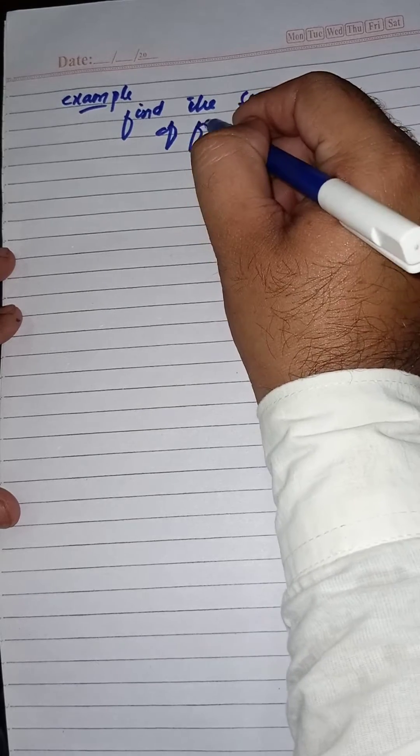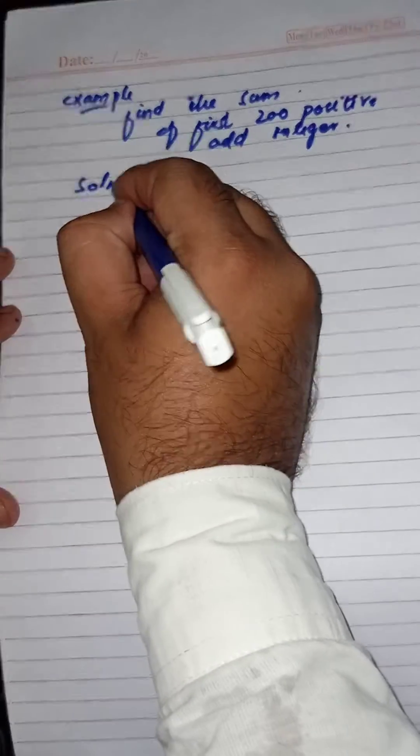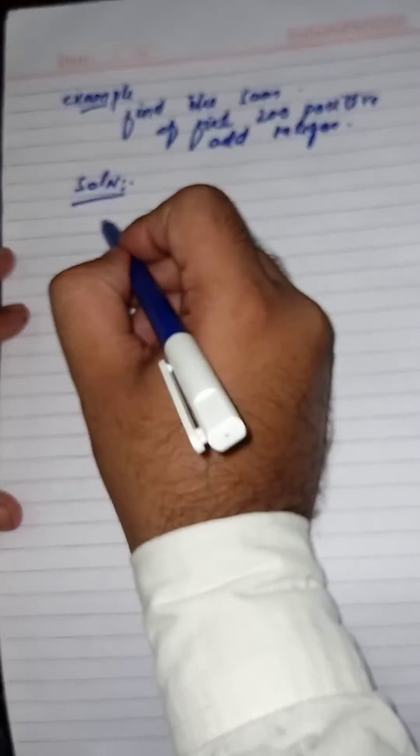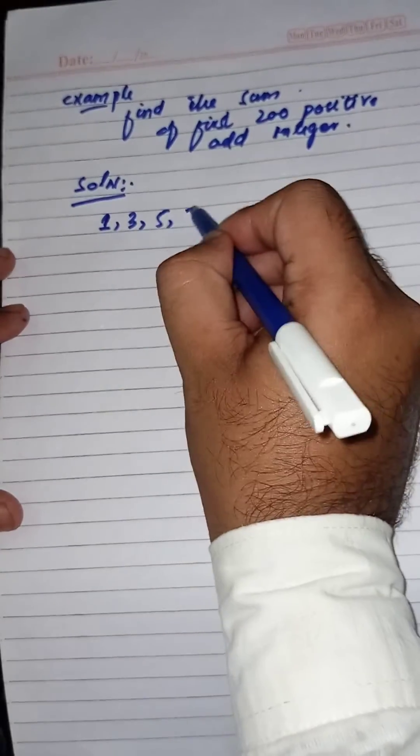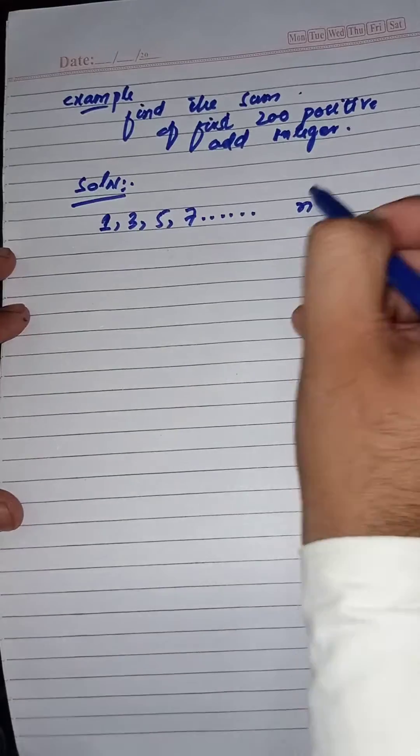Find the sum of the first 200 positive odd integers. In this example we will learn how to find the sum of the nth term of an arithmetic sequence. The 200 positive odd integers are 1, 3, 5, 7, up to n terms.